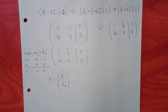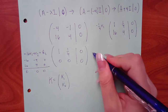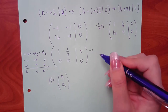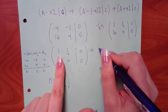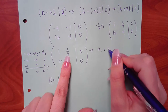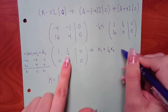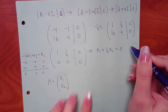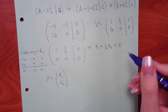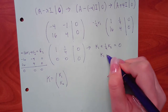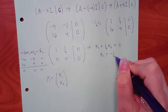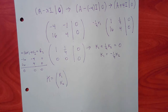The top equation gives us: one k1 plus one-fourth k2 equals zero, so k1 equals negative one-fourth k2. That's the relationship between k1 and k2.